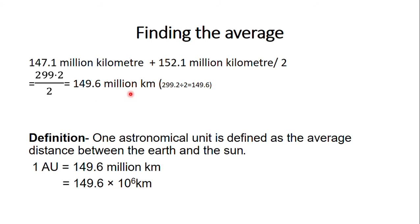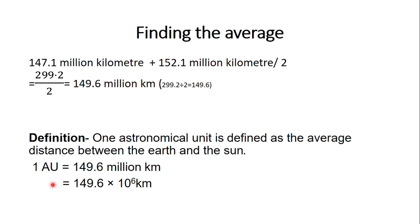So, this 149.6 million kilometres is the average distance, which is taken as one astronomical unit. The definition: one astronomical unit is defined as the average distance between the earth and the sun. The distances are calculated using Venus transit, the average of aphelion and perihelion positions is found, and that average — 149.6 million kilometres — is referred to as one astronomical unit.